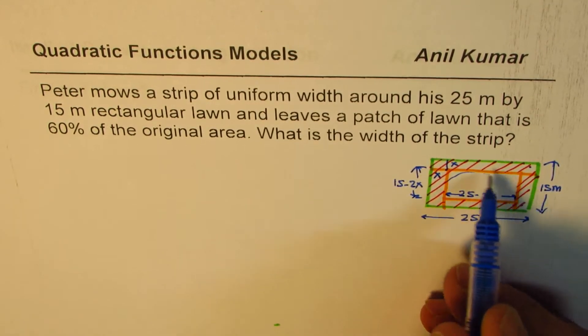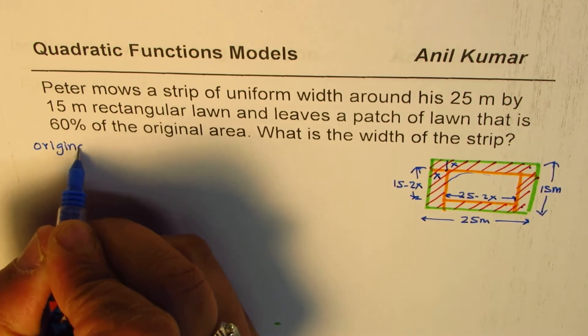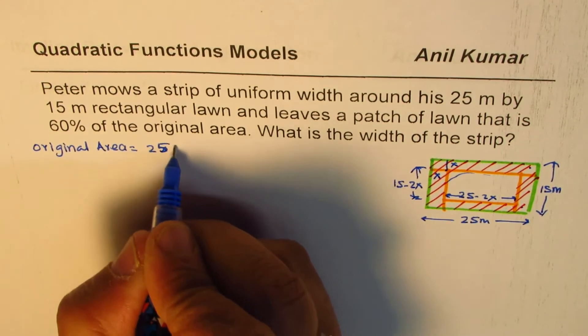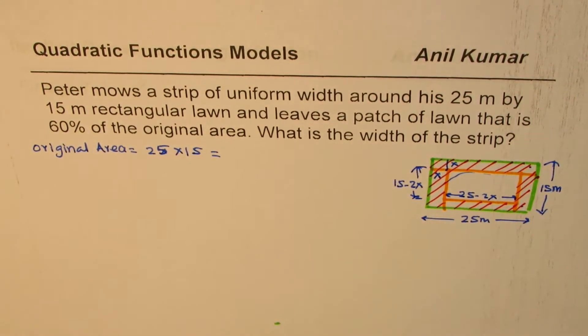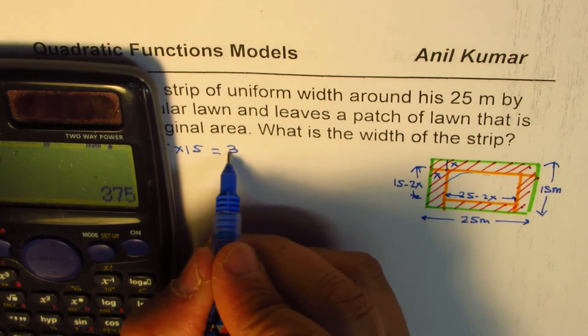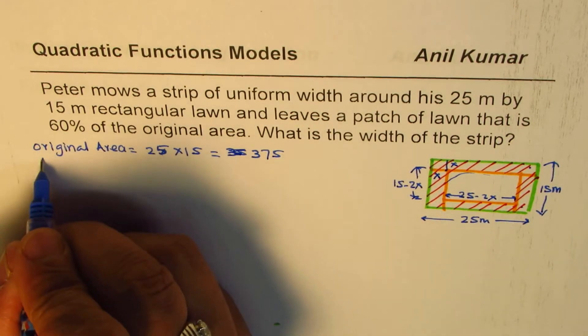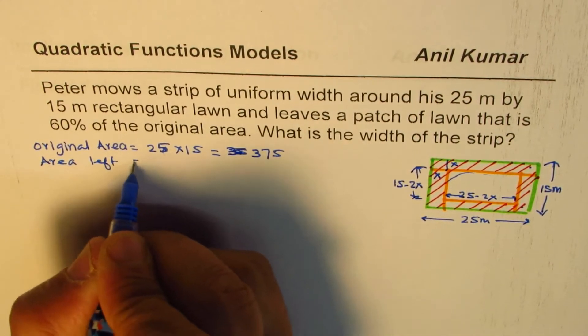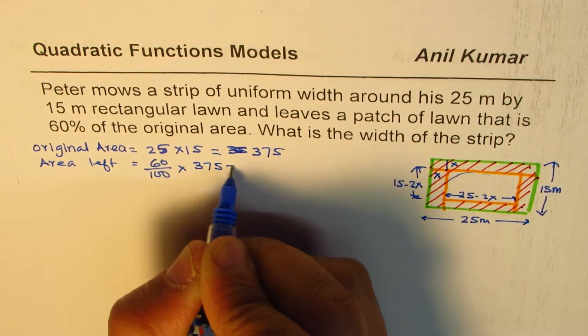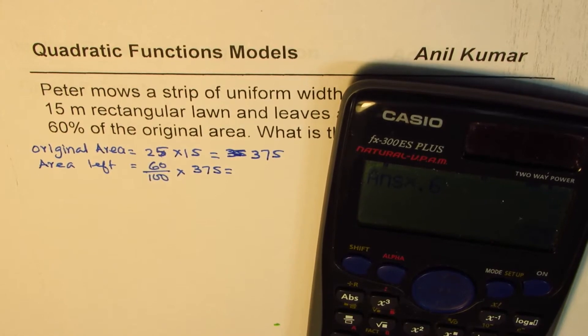That gives you area of inside. Area of inside is 60% of outside area. Original area will be 25 times 15, which is 375. Area left is 60%, that means 60/100 times 375, or 0.6 times 375. So I will multiply this by 0.6, which equals 225.